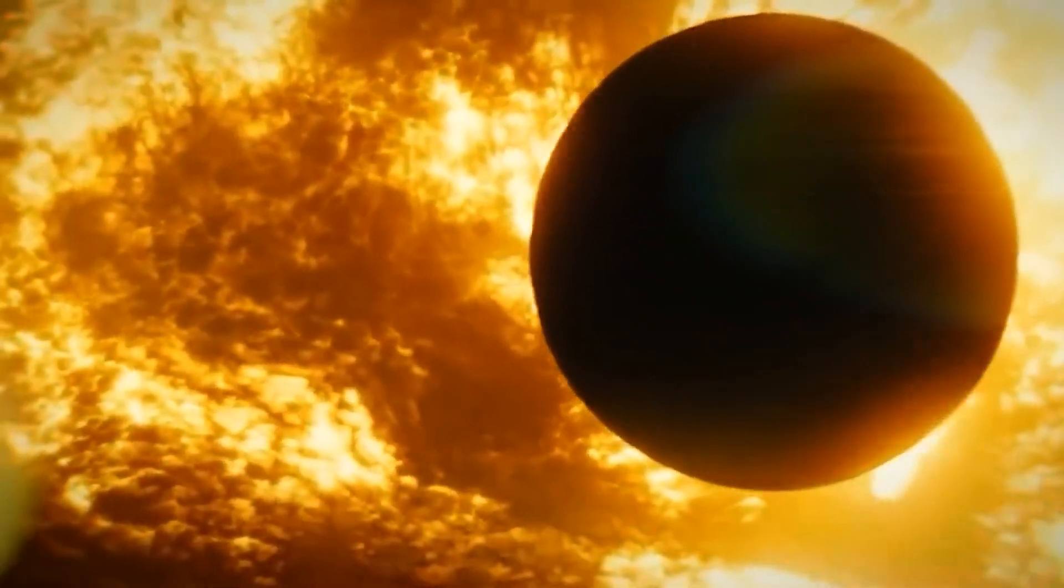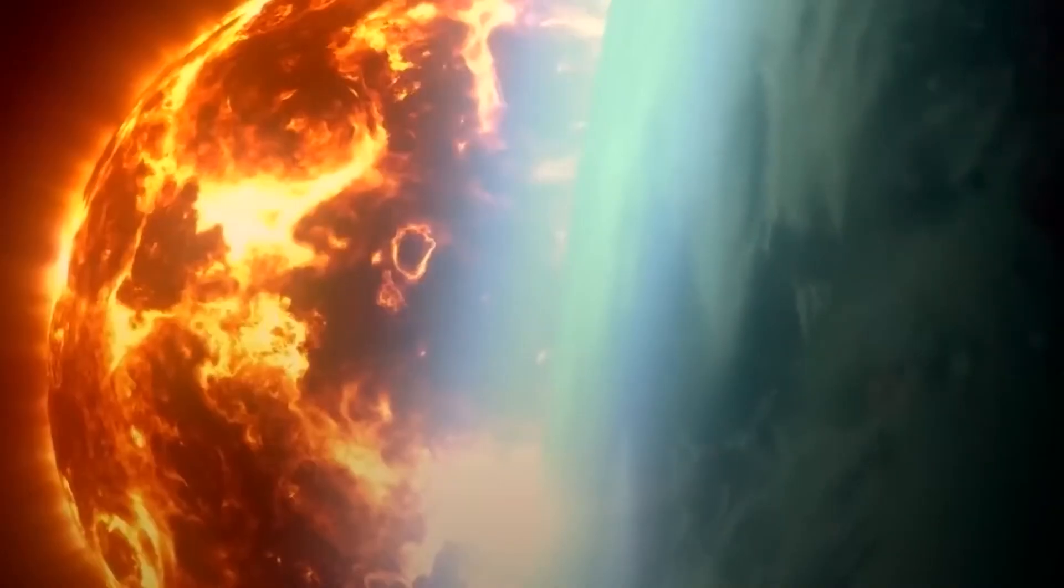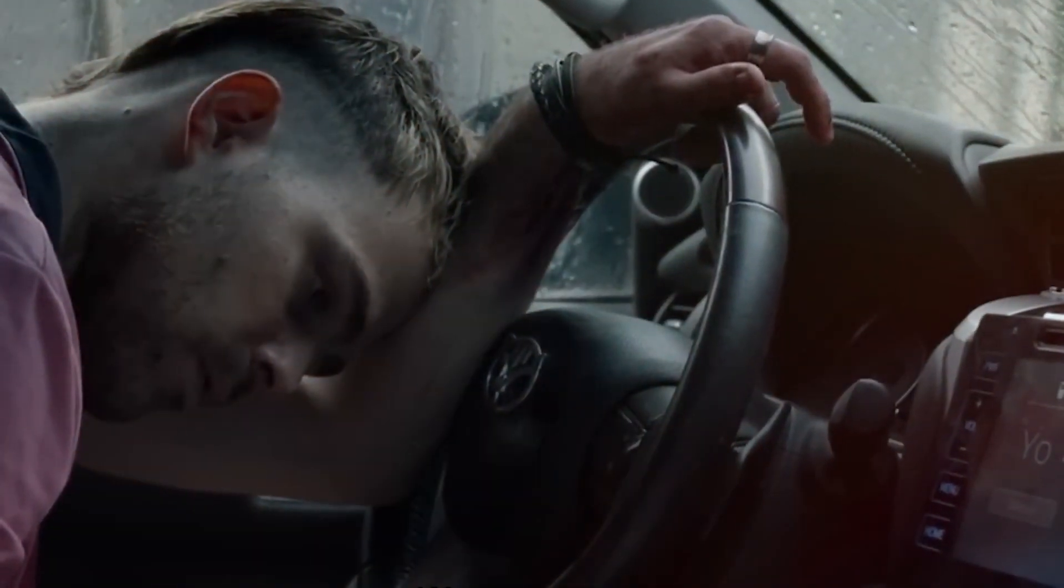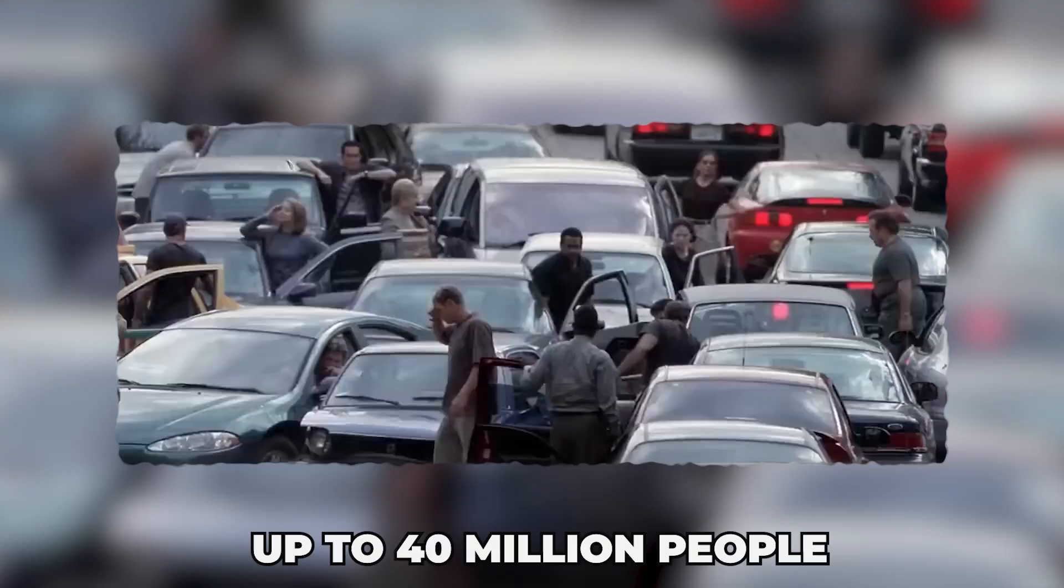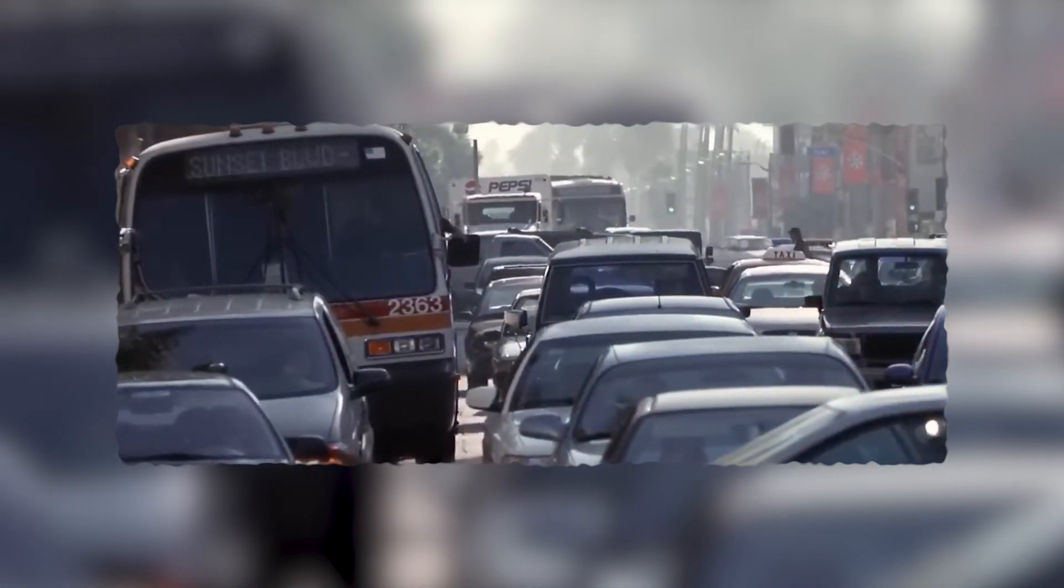A solar storm as potent as the Carrington event could result in trillions of dollars in damages on Earth. Power outages could affect up to 40 million people in the United States alone, lasting for several years.